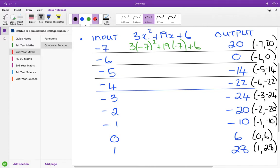Okay, so we're going to look now at the link between functions and patterns by looking at the differences. So if we look at the difference here, going from 20 to 0 is minus 20. The difference here, from 0 to minus 14 is minus 14.